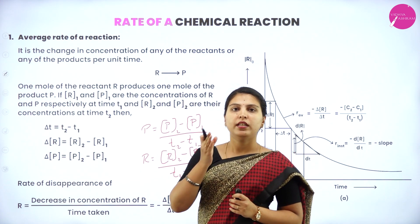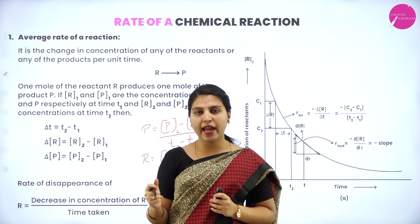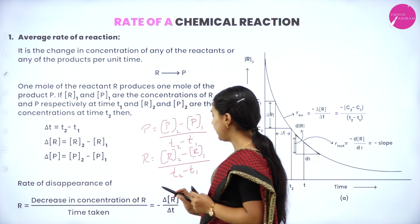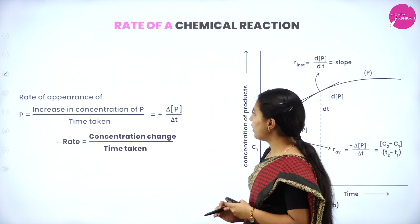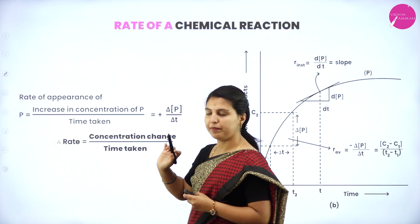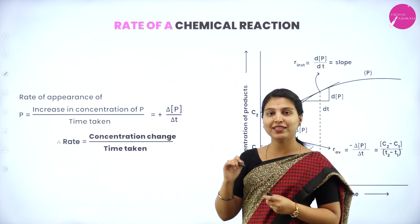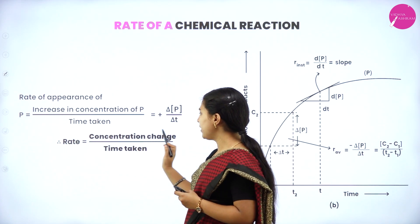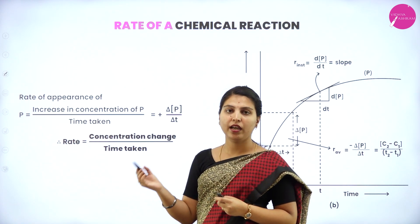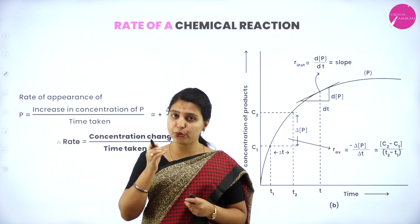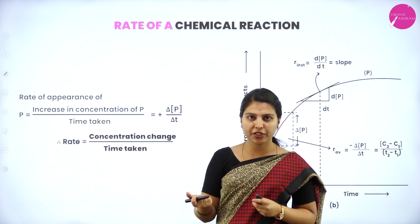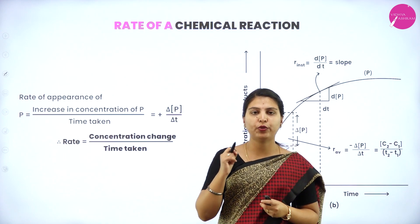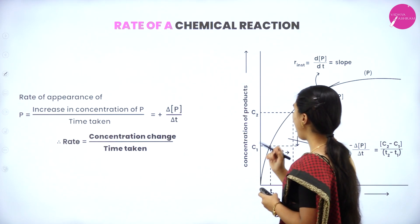The concentration decreases on the reactant side, which is why a negative sign is used for reactants in the rate expression. On the product side, the concentration increases over time, so a positive sign is used. Rate is equivalent to concentration change divided by time taken — whether that concentration decreases (reactants) or increases (products). This sign notation is important to observe and learn.